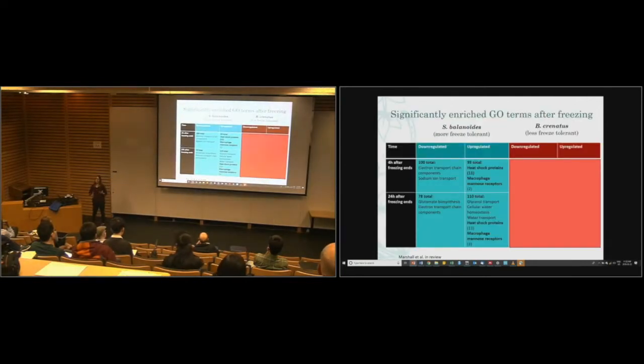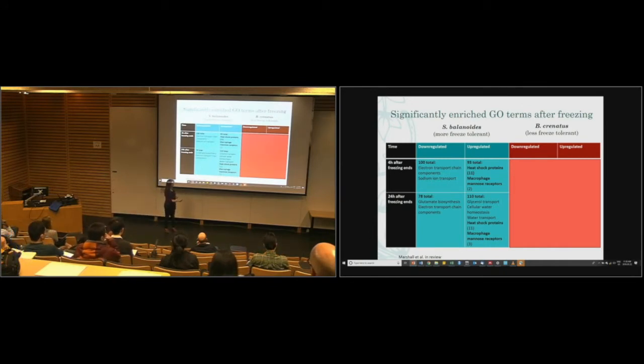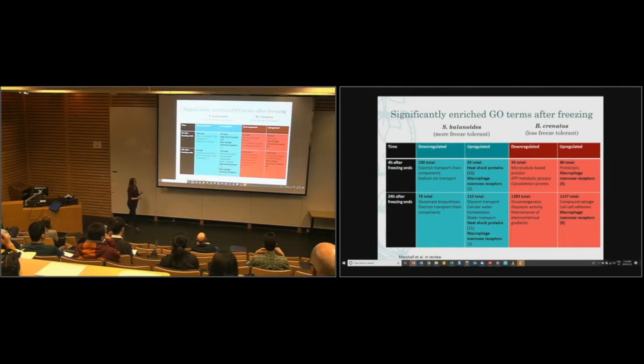So what were the functional enrichment categories? One of the interesting things that was down-regulated was electron transport chain components. It sort of makes sense to down-regulate that to reduce the amount of damage potentially after that freezing event. We saw a lot of heat shock proteins, macrophage mannose receptors, and I'll get back to that in a minute. And also things that had to do with glycerol and cellular water transport. These were our aquaporins. So this is the first time there's been any suggestion that they might be important in freeze tolerance in intertidal animals.